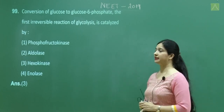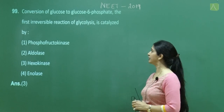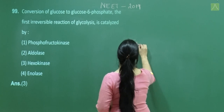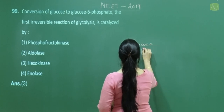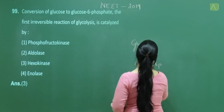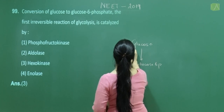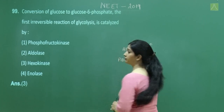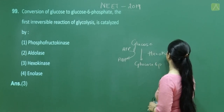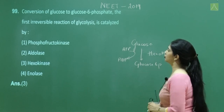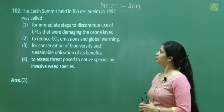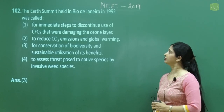Question number 99: Conversion of glucose to glucose-6-phosphate — the first irreversible reaction of glycolysis. In this step, ATP is utilized in a phosphorylation reaction catalyzed by the enzyme hexokinase. The correct answer is option 3.